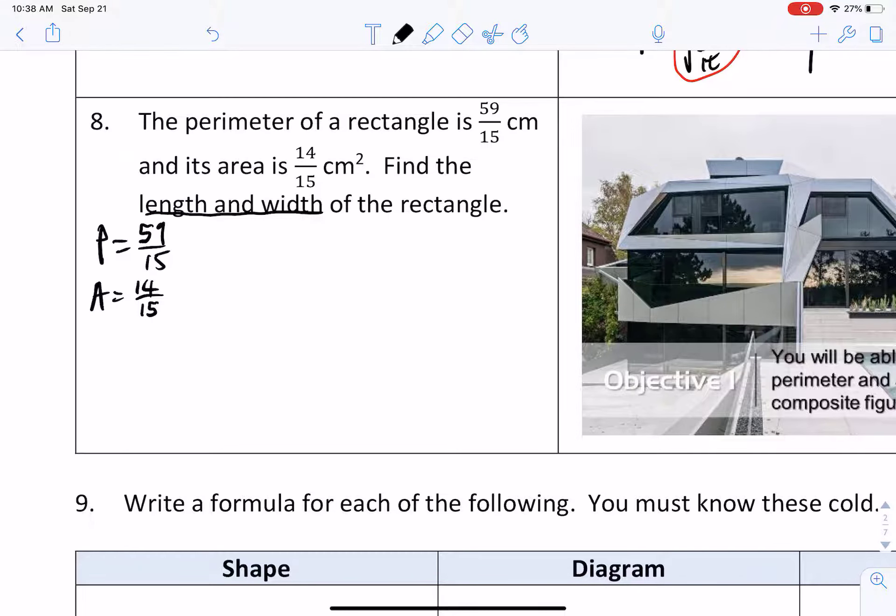Let's write equations for each of these quantities. The perimeter should be two lengths plus two widths. And for the area, it's length times width. So what we've just made here is a system of equations.